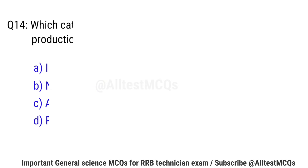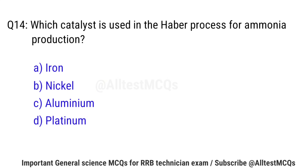Question No. 14: Which catalyst is used in the Haber process for ammonia production? Right option is A: Iron.